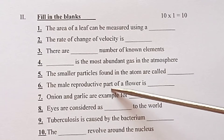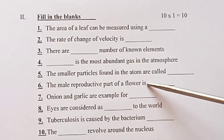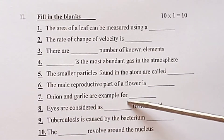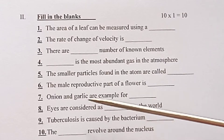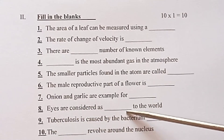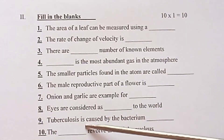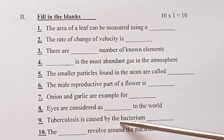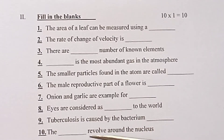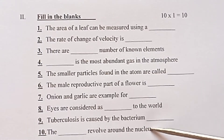Sixth: The male reproductive part of the flower is ___. Seventh: Onion and garlic are examples for ___. Eighth: Eyes are considered as ___ to the world. Ninth: Tuberculosis is caused by the bacterium ___. Tenth: The ___ revolves around the nucleus.